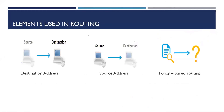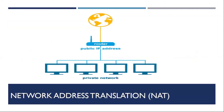There are key elements used in routing: destination address, source address, and policy-based routing. Policy-based routing is where routing decisions depend on other sources of information such as MAC address, type of service, or network load. Because of the lack of public IP addresses, Network Address Translation — NAT — technology was developed to permit translation from private addresses to public addresses.